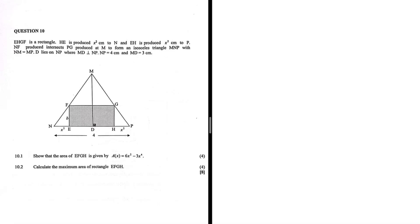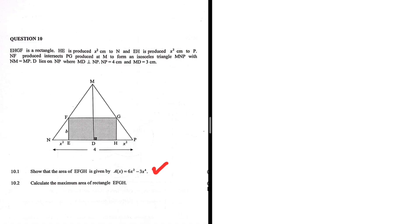This is a very special equation. Question 10.1: show that the area of EFGH is given by A(x) = 6x² - 3x⁴. Let's take a look at the question statement and see how we can potentially solve this. EFGH is a rectangle.